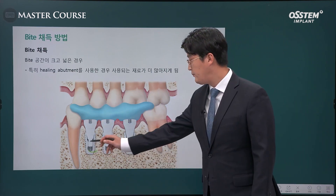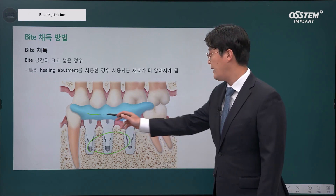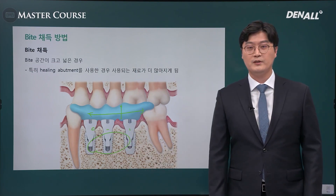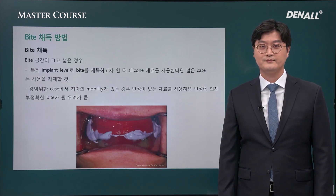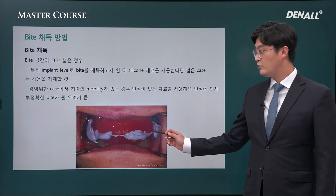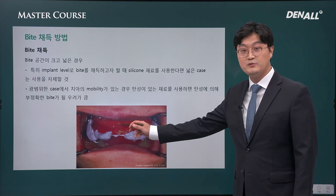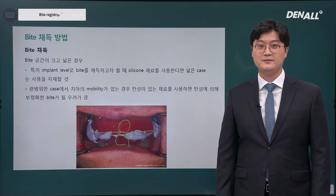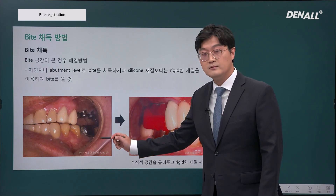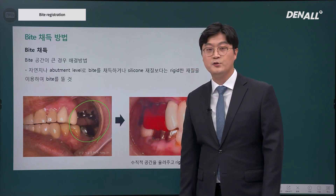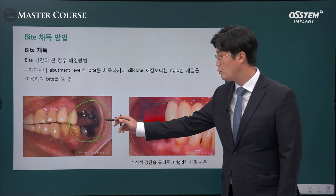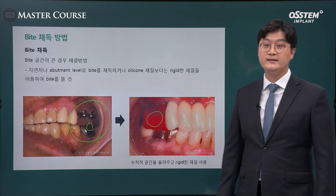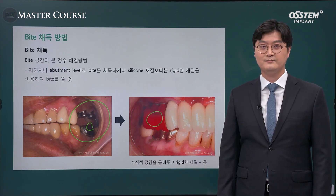In case of multiple implants, doing bite registration on the healing abutment using polyvinyl siloxane makes the material very thick. Because it's elastic, there could be error when mounting to the articulator. Therefore, in case of an edentulous patient, doing everything with polyvinyl siloxane may not be ideal — first create a wax rim, and register the bite using polyvinyl siloxane in the space between the wax rims. Or if it's not edentulous but there is a posterior loss and we have to register a bite, then in the bite index, not always polyvinyl siloxane — sometimes pattern resin or a rigid material could be the recommended option.